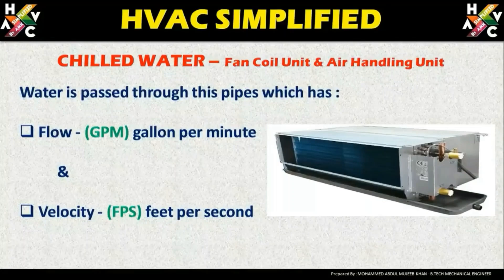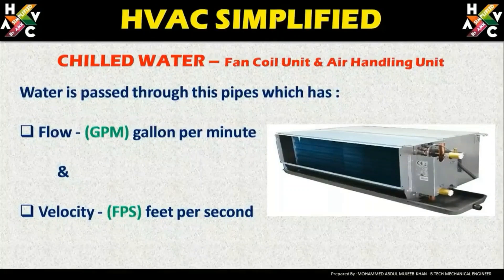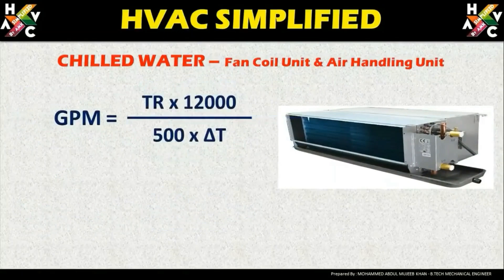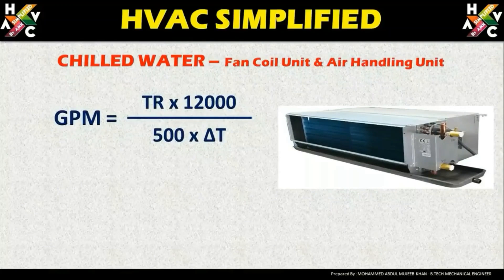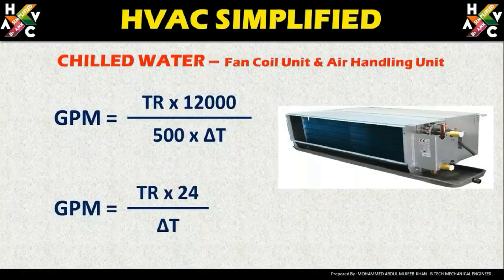For any fan coil unit, these are the two basic parameters we need to understand: GPM and FPS, which is also known as feet per second. Now let us understand the formula for GPM. GPM is equal to TR multiplied by 12,000, divided by 500 multiplied by delta T, which is further simplified to TR multiplied by 24 divided by delta T.